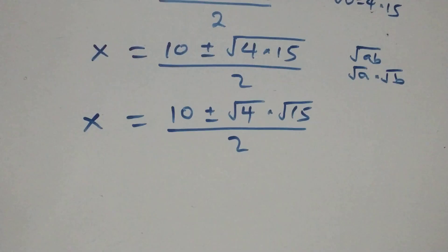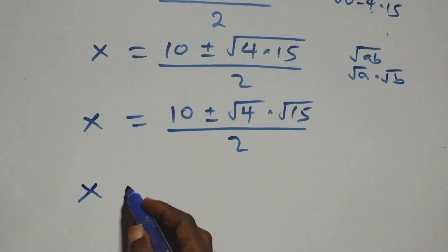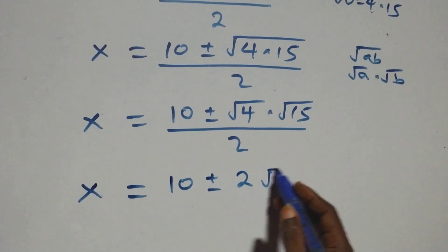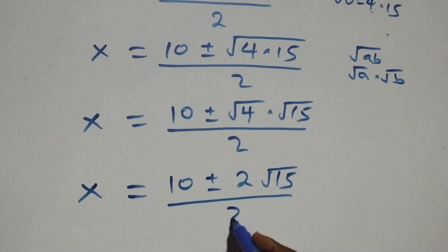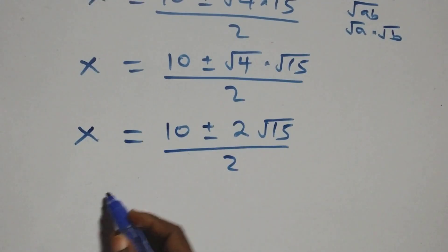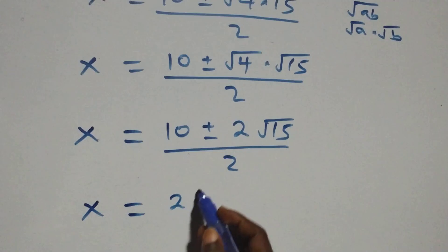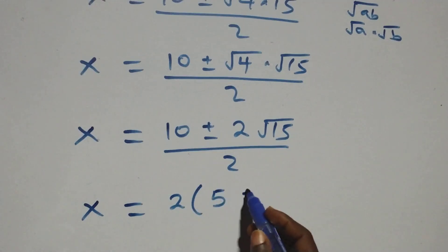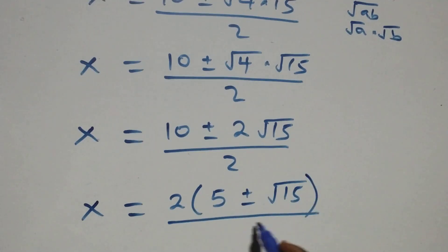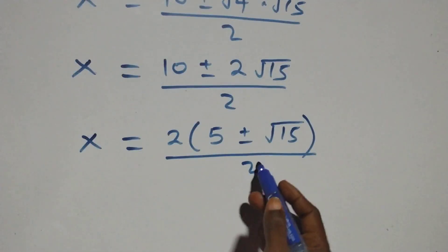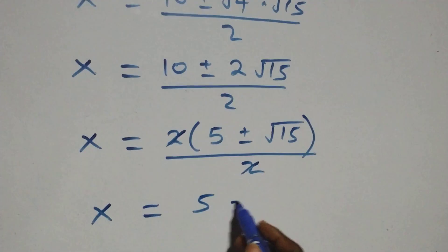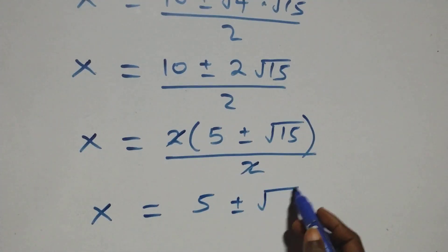This gives x equals to ten plus or minus two times root fifteen, over two. We then factor out two from the numerator, giving x equals to two times (five plus or minus root fifteen), over two. The two cancels, and this becomes x equals to five plus or minus root fifteen.